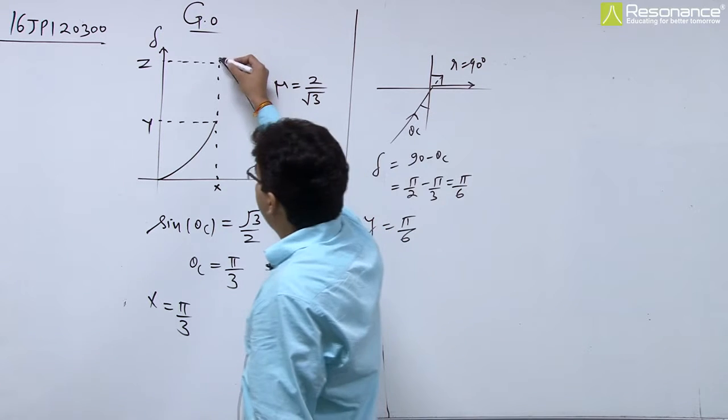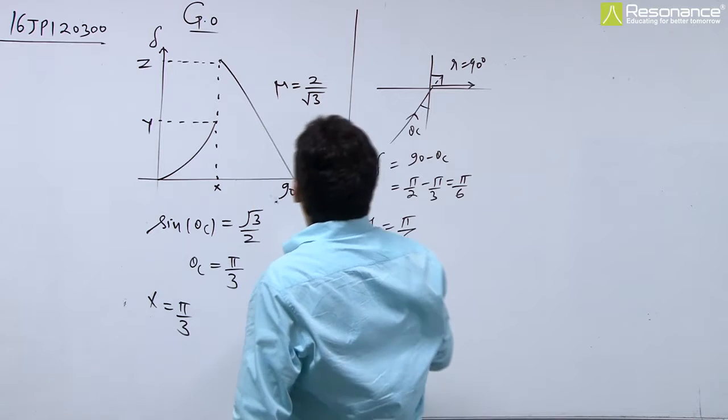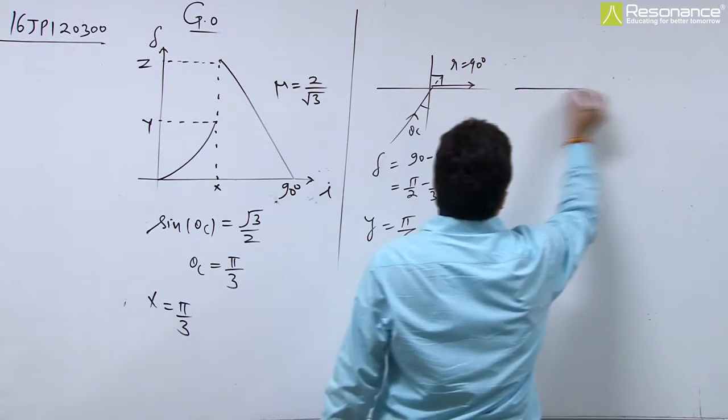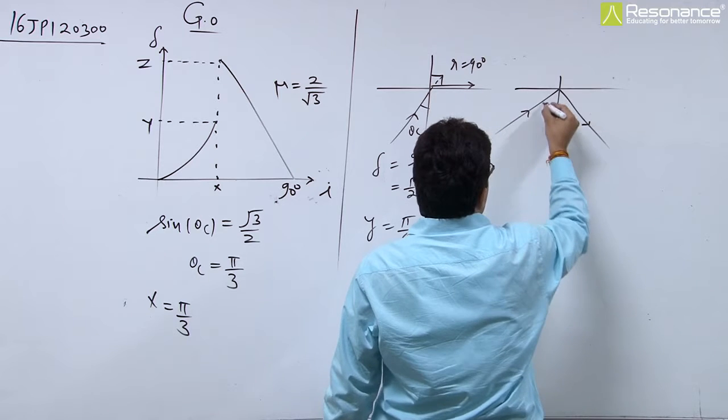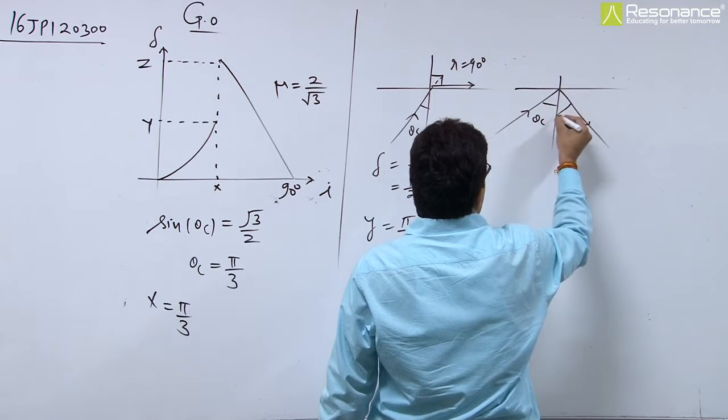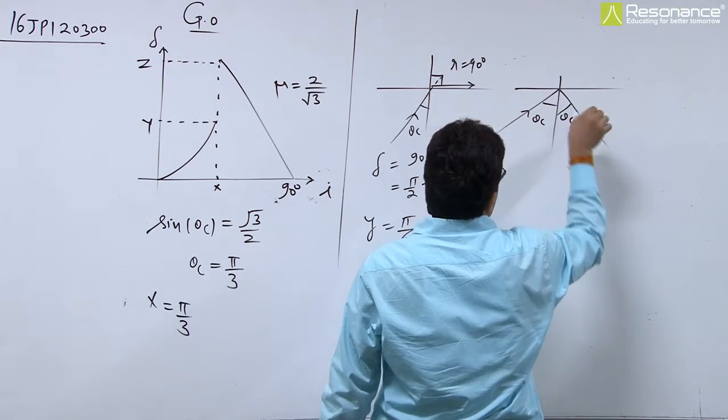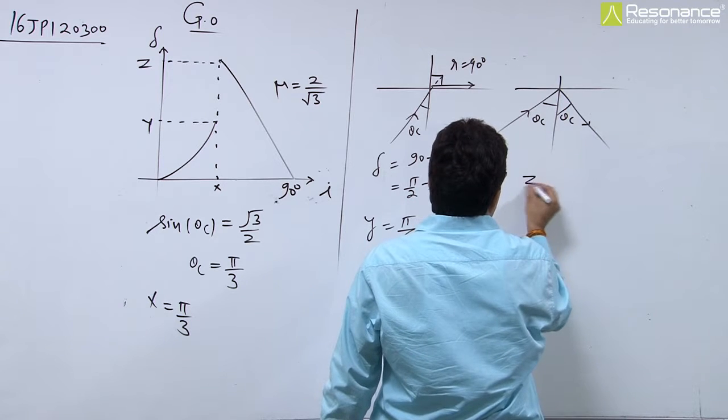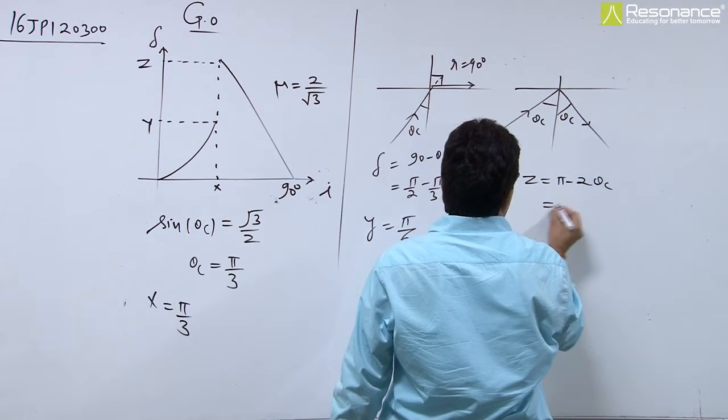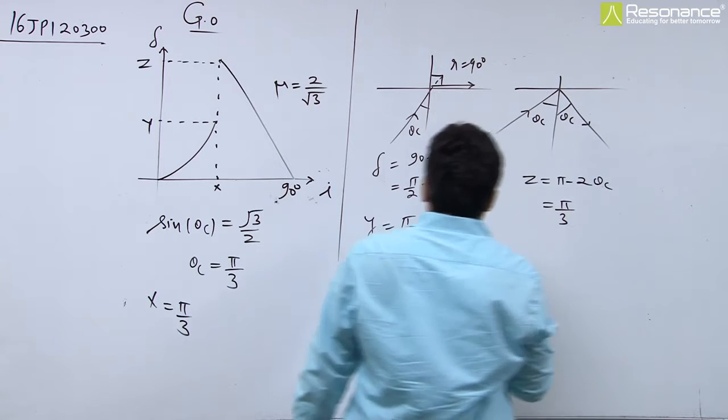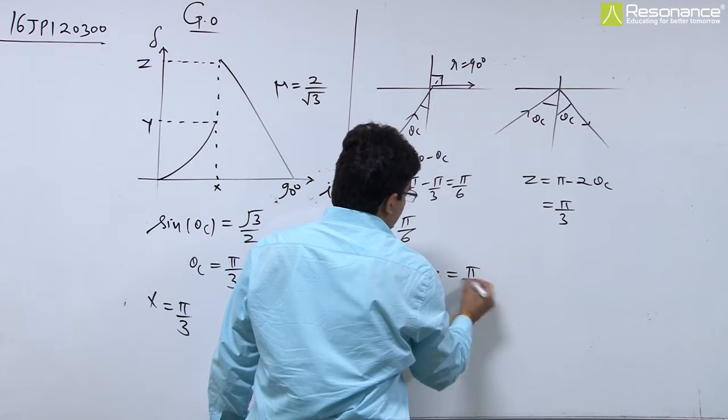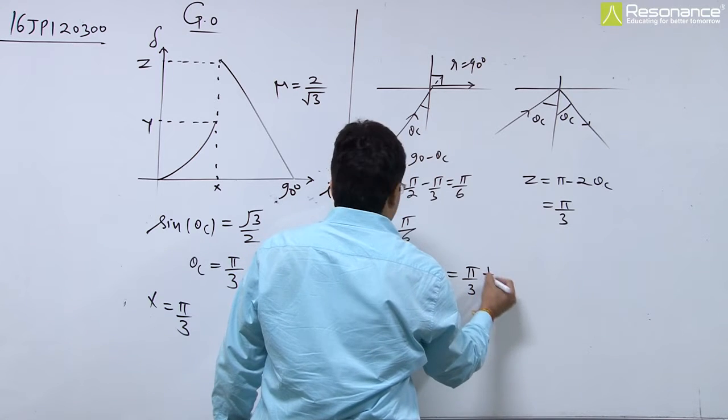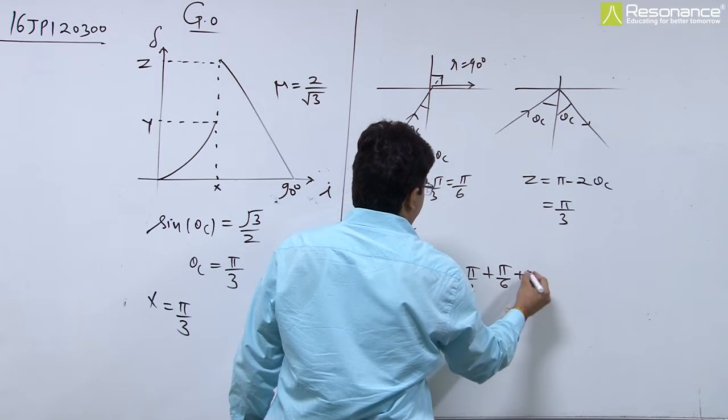Pi by 6, and this is the condition after TIR. Then after TIR, the deviation is 180 minus 2 theta c, because light completely reflected in the same medium. So z equals pi minus 2 theta c, so it is pi by 3. So total x plus y plus z equals pi by 3 plus pi by 6 plus pi by 3.